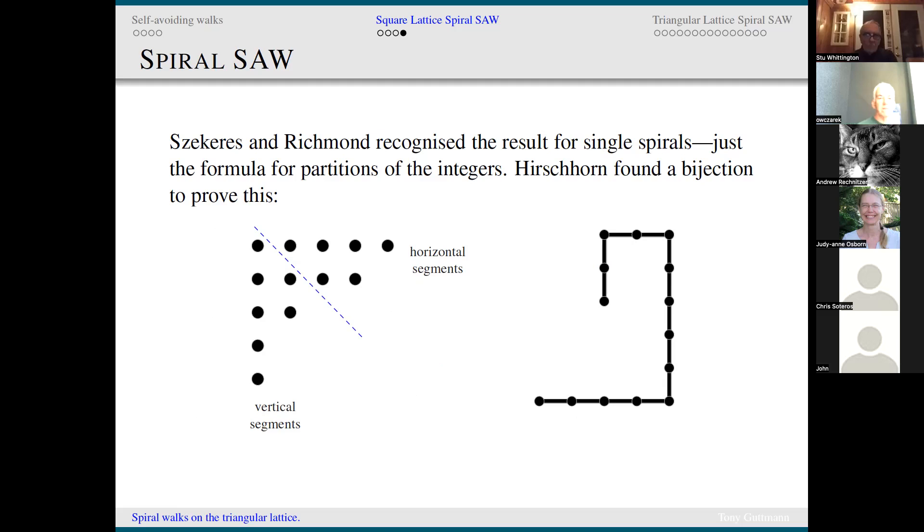We published this and Bruce Richmond from Waterloo, who was visiting New South Wales with George Szekeres, immediately recognized the results for single spirals, which is simply the asymptotic formula for the partitions of the integers. Michael Hirschhorn found a quite elegant bijection to prove this. On the left, I've drawn a partition of the integers and a diagonal line shaded in blue. To the right of that diagonal line, there are four dots and two dots representing the length of the horizontal segments. That gives you a bijection between a partition of the integers and the spiral walk, demonstrating our result purely bijectively with no calculations whatsoever.